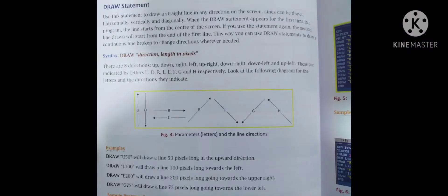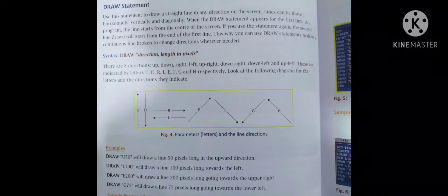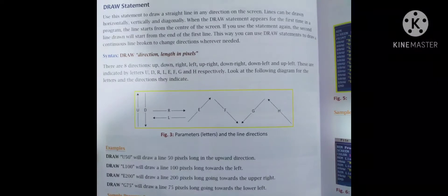Next is the DRAW statement, used to draw a straight line in any direction on the screen. Lines can be drawn horizontally, vertically, and diagonally. When the DRAW statement appears for the first time in a program, the line starts from the center of the screen. If you use the statement again, the second line drawn will start from the end of the first line.